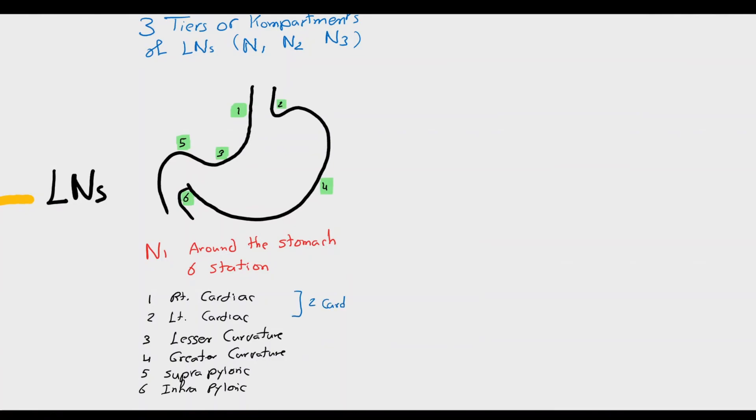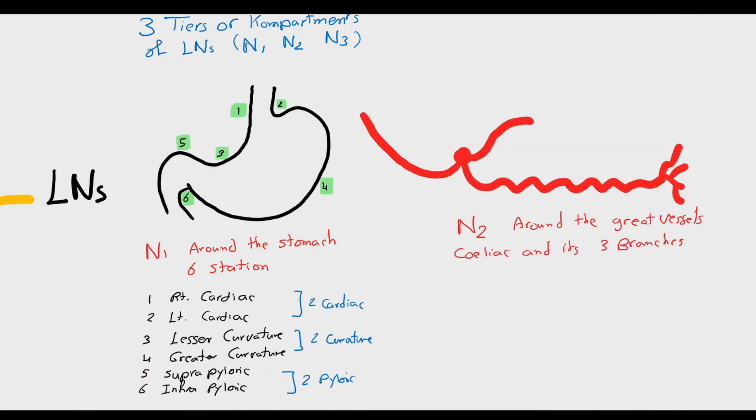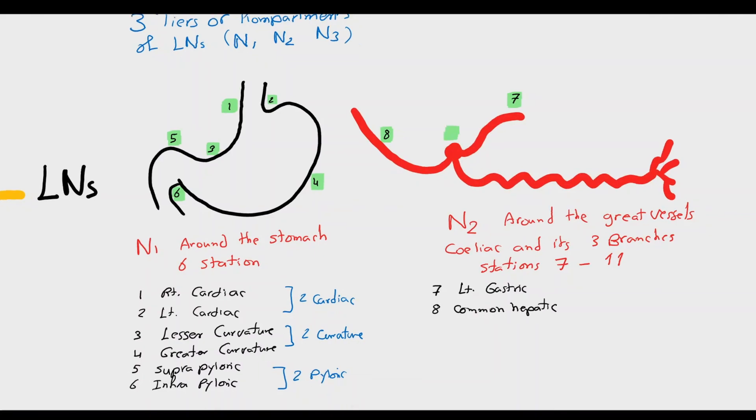The N2 tiers are the lymph nodes around the great vessels supplying the stomach, stations 7 to 11. These are the left gastric lymph nodes, the common hepatic lymph nodes, the celiac trunk lymph nodes, the hilum of spleen lymph nodes, and lymph nodes around the splenic artery.